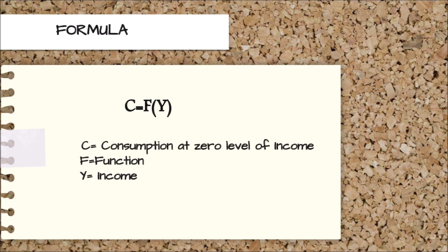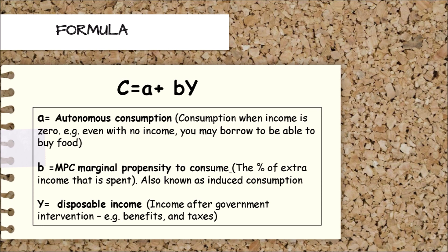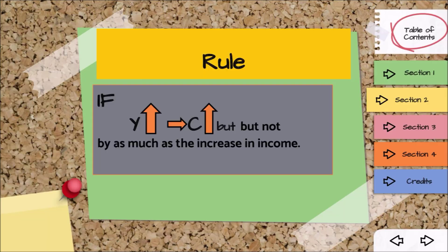Keynes expressed the level of consumer spending with the formula: C = f(Y), where C is consumption at a given level of income, f is a function, and Y is income. In mathematical terms, this is expressed as C = a + bY, where 'a' depicts autonomous consumption — consumption when income is zero — 'b' is the marginal propensity to consume, representing the percentage of extra income spent, and Y is disposable income, the income after deduction of taxes.